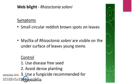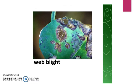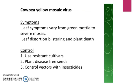Web blight is severe at the vegetative stage. You can control web blight by the use of disease-free seed, avoiding dense planting, and using a recommended fungicide. Here we can see a picture of how the web blight disease affects the leaves of the cowpea plant.